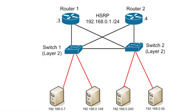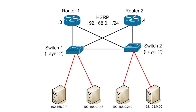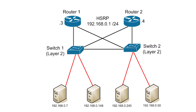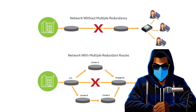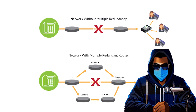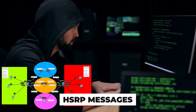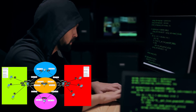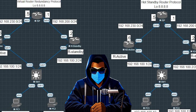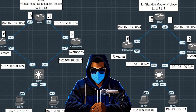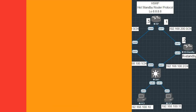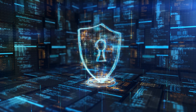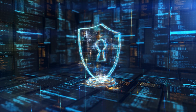HSRP, or Hot Standby Router Protocol, is like having a backup singer ready to take over if the lead singer loses their voice. It provides network redundancy by having a standby router ready to step in, minimizing downtime. But if a hacker spoofs HSRP messages, they can redirect traffic their way. VRRP is similar to HSRP but is an open standard — the universal understudy in our network theater. Security is key to prevent unauthorized stand-ins from taking over the show.